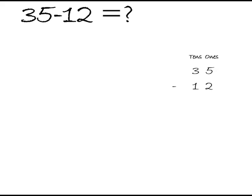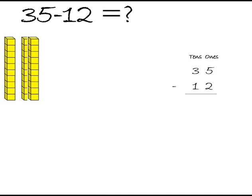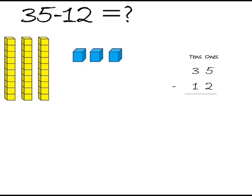So by using base tens blocks, for 35 we need 3 tens rods and 5 ones blocks. From 35 we have to subtract 12. So from 5 ones we subtract 2 ones, that means take away 2 ones blocks, and from 3 tens take away 1 tens rod.